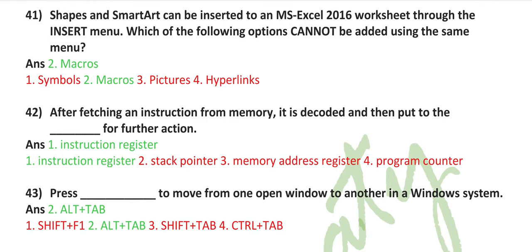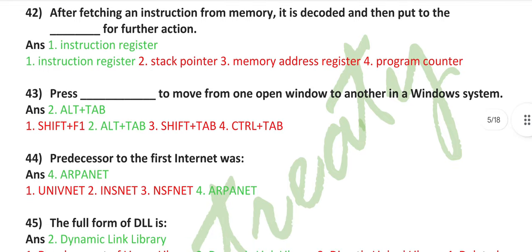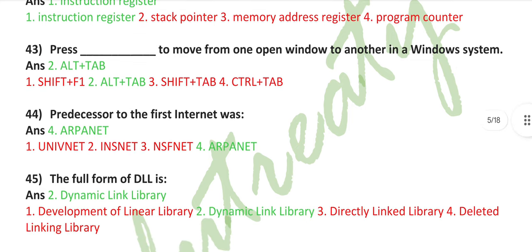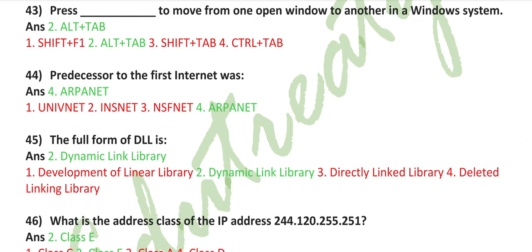Shapes and smart art can be inserted into an MS Excel 2016 worksheet through the insert menu. Which of the following options cannot be added using the same menu? Macros. After fetching an instruction from memory, it is decoded and then put into the instruction register for further action. Press Alt plus Tab to move from one open window to another in a Windows system.